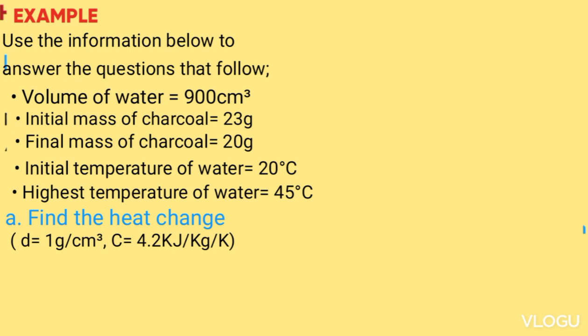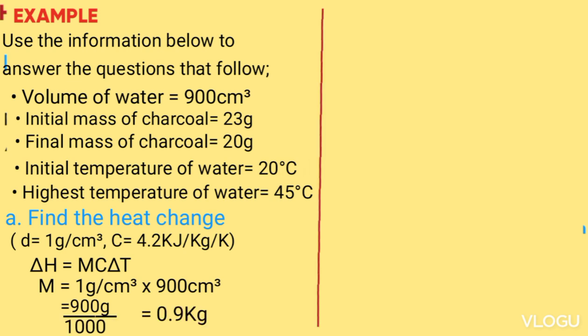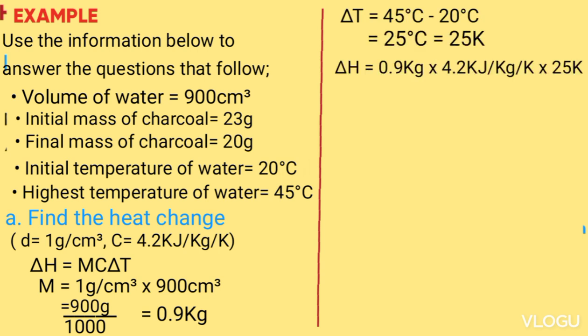Solution: Delta H equals MC change in T, where M equals density of water times volume of water, which is 1 gram per cm³ times 900 cm³, get 900 grams. Now because I am given C in kilojoules per kg per Kelvin, I convert my mass to kilograms by dividing by 1000, get 0.9 kilogram. Change in T will be the highest temperature T2 minus initial temperature, 45 minus 20. So delta H should be 0.9 kilogram times 4.2 kilojoules per kg per Kelvin times 25 Kelvin. The answer gives us 94.5 kilojoules.